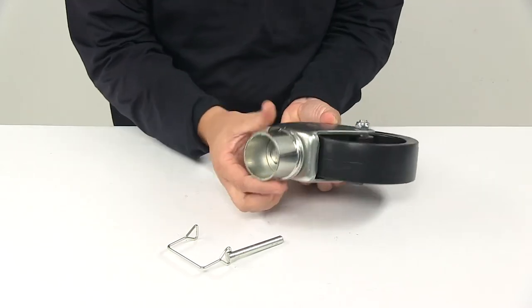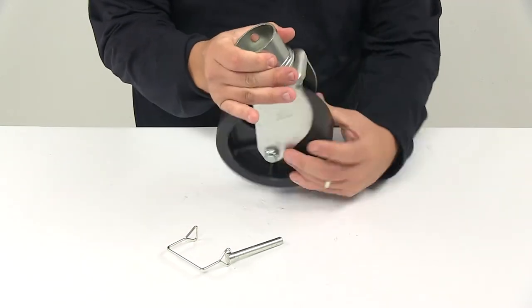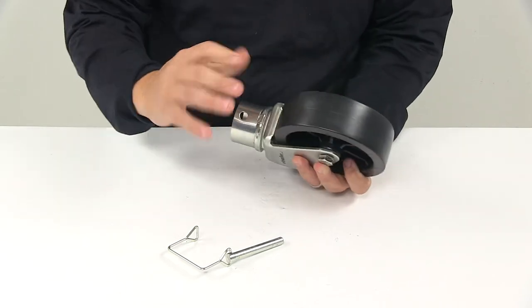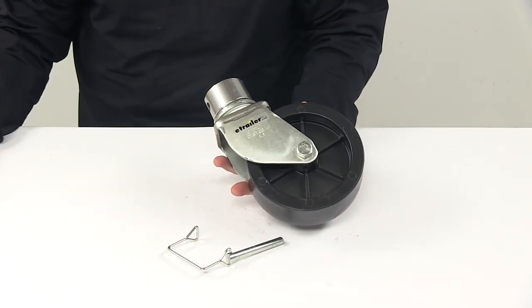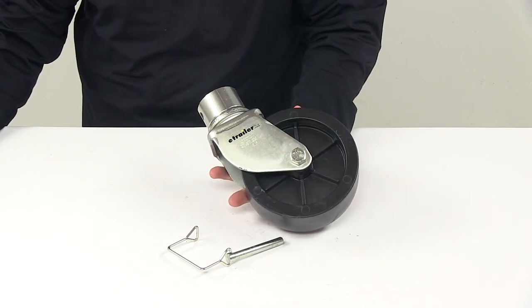It does have the rotating design, so the wheel can spin freely without rotating the inner tube of the jack. That's going to do it for today's look at the Bulldog removable 6 inch poly caster assembly for 2 inch jack tubes.